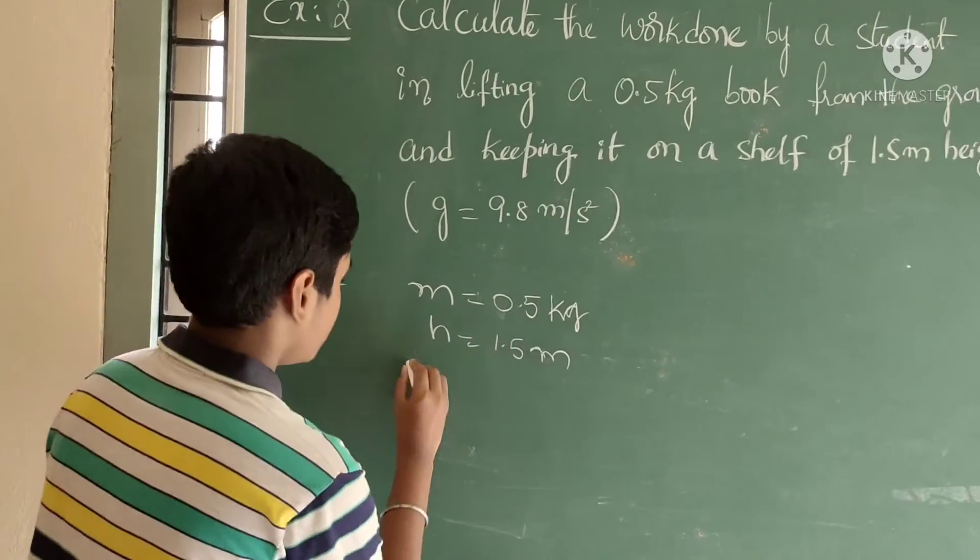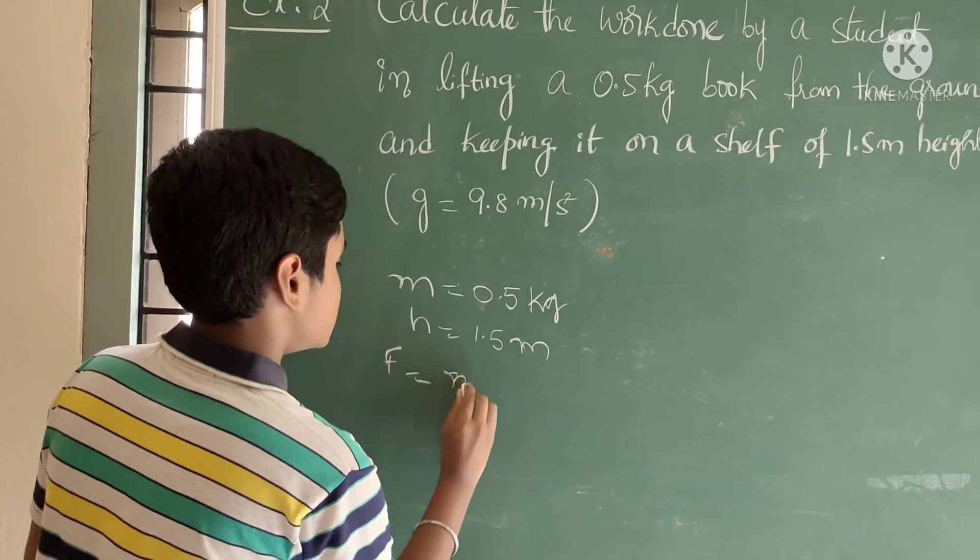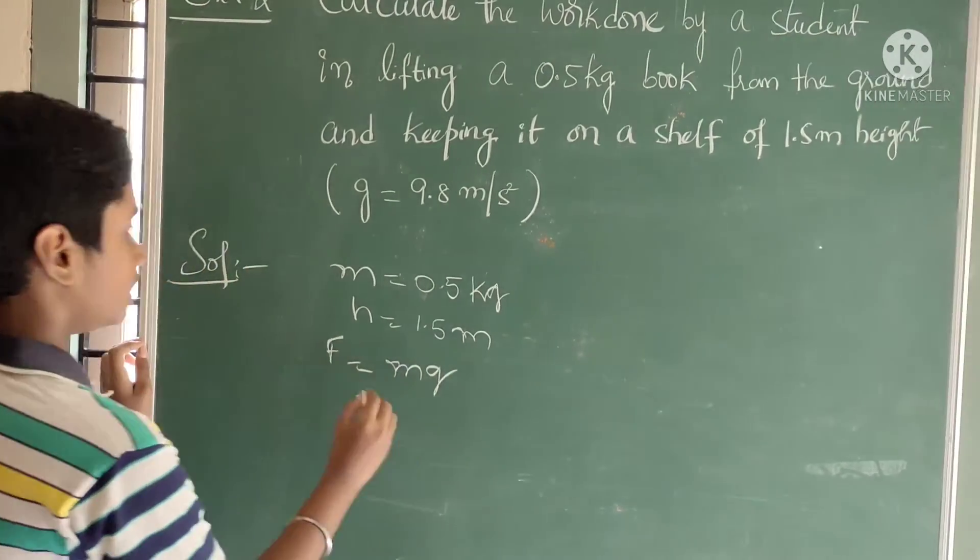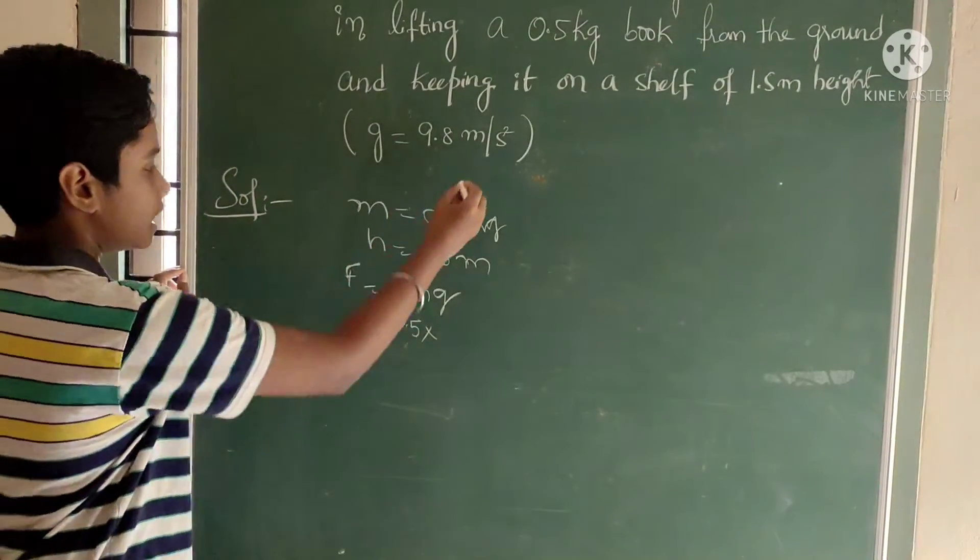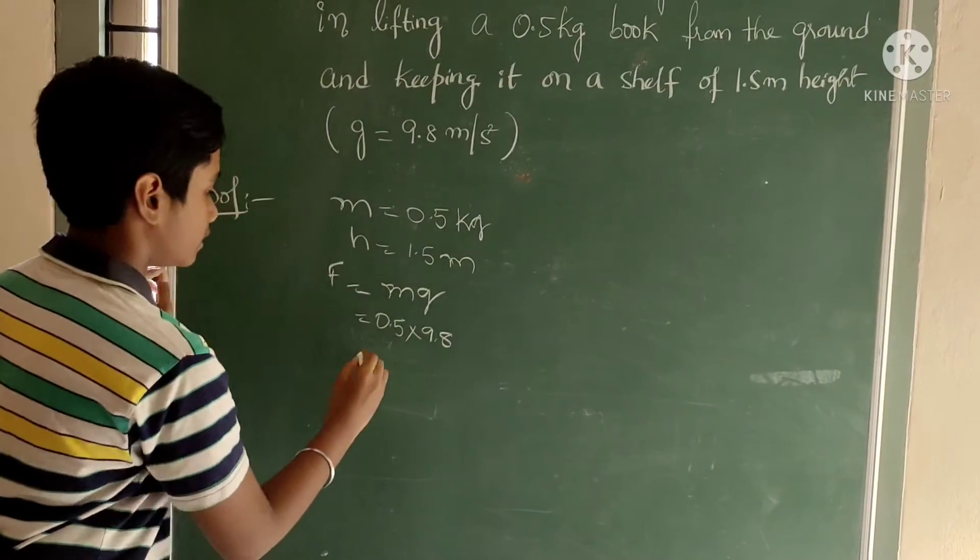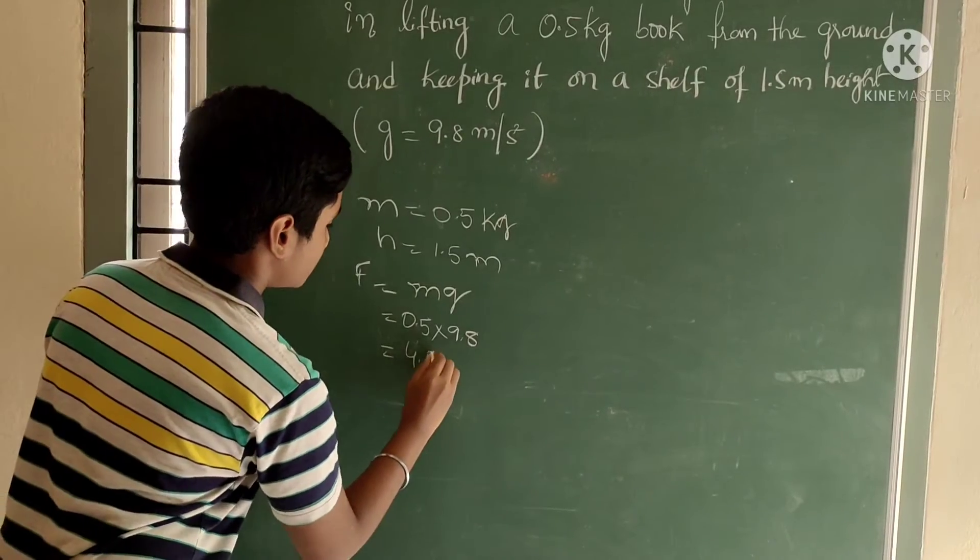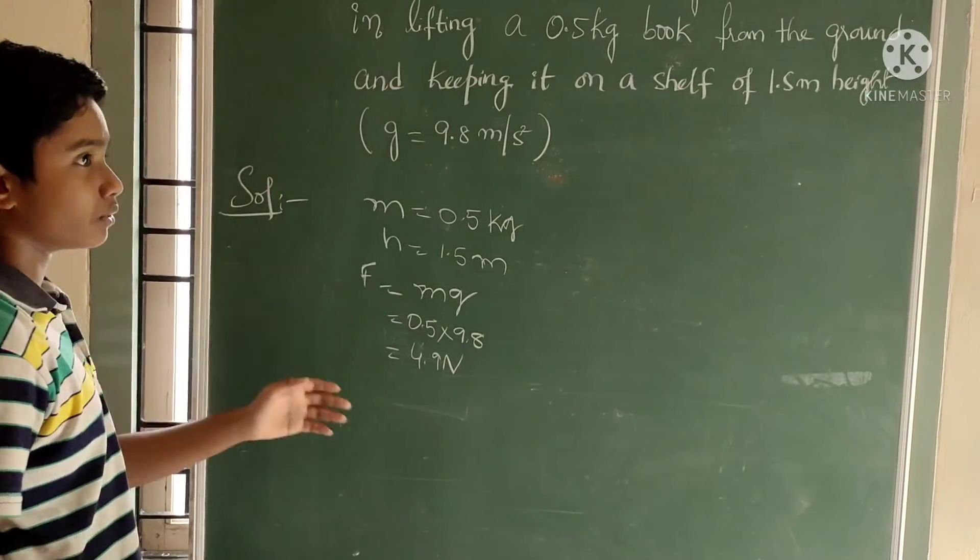Force acting on the book F is equal to MG. Here M we got 0.5 into G as 9.8. 0.5 into 9.8 is 4.9 newtons. F is equal to 4.9 newtons.